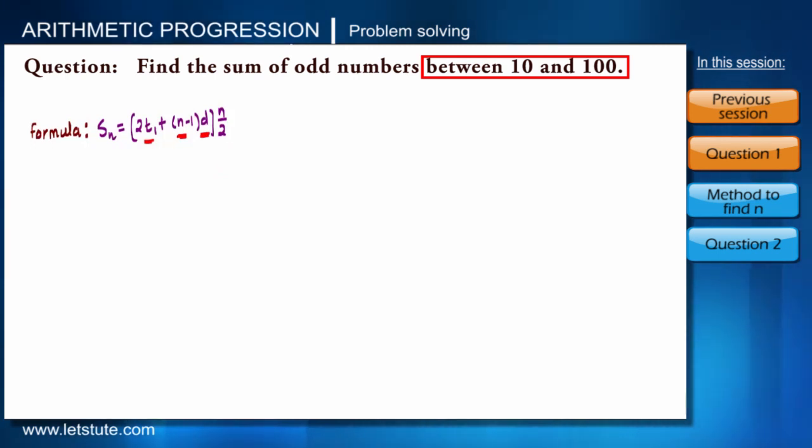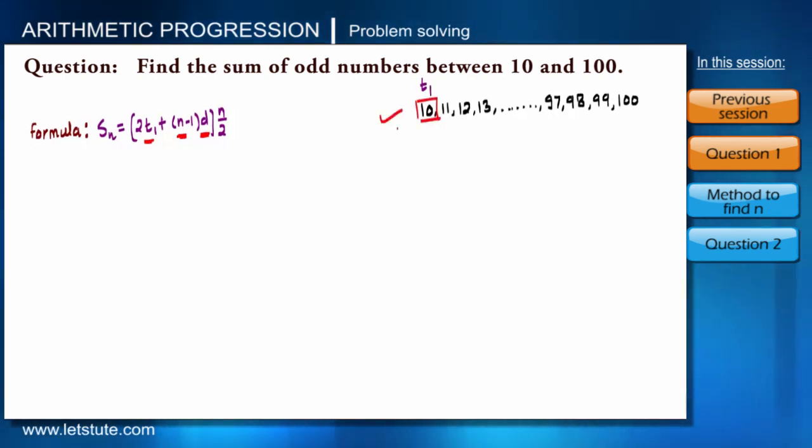So let's list it. It will start with 10, 11, 12, 13, and so on to 97, 98, 99, and 100. This is the last number of the range. So now what is T1? T1 is 10, right? No.